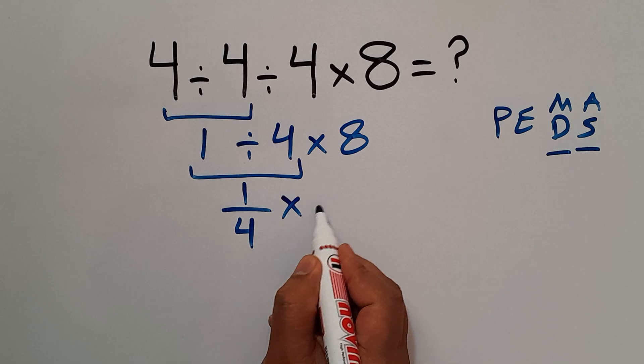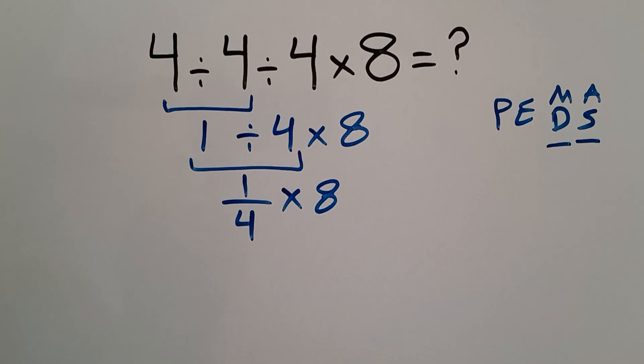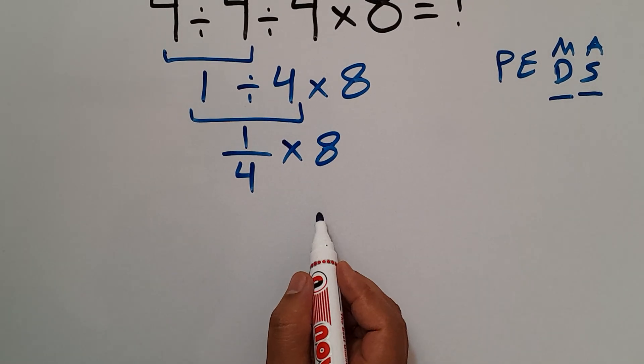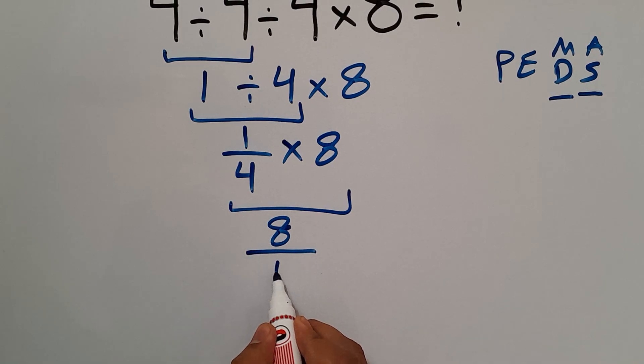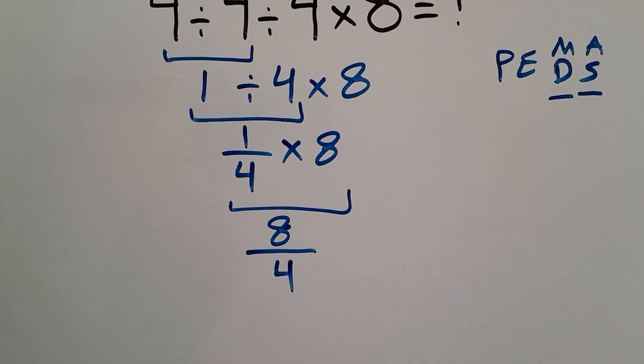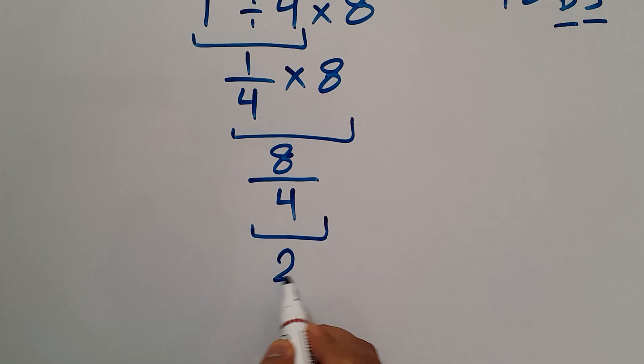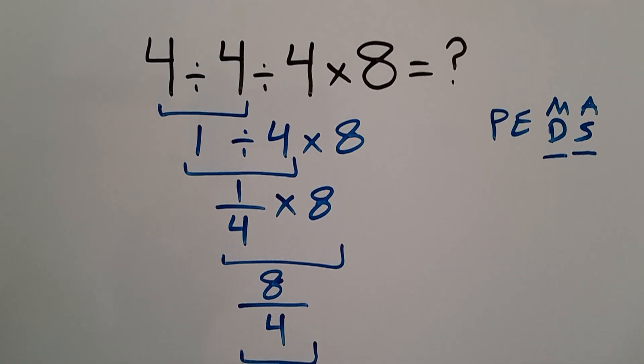1 over 4 times 8 equals 8 over 4, and 8 over 4 is just 2. So our final answer to this problem is 2.